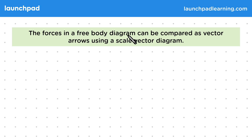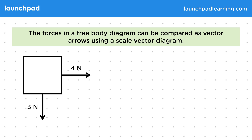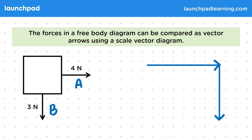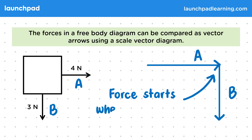The forces in a free body diagram can be compared as vector arrows using a scale vector diagram. Remember that forces are vectors that can be represented as arrows. Let's consider a box with two forces acting on it. We can take these forces and create a scale vector diagram by drawing out A and B using a ruler. The arrows should be drawn so that the second force starts where the previous one ends.